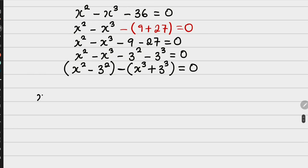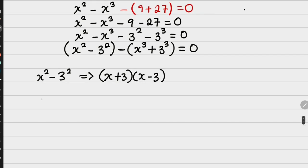Now, picking x squared minus 3x squared, I can have it using the knowledge of difference of two squares as x plus 3 into x minus 3. That is one aspect.